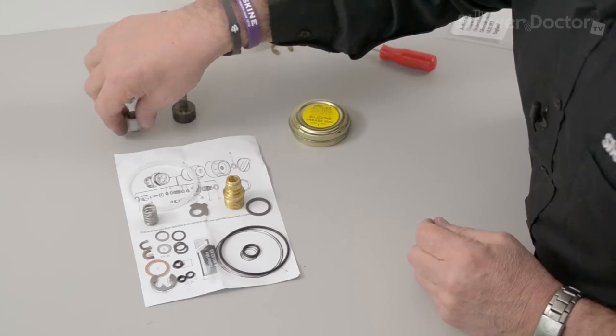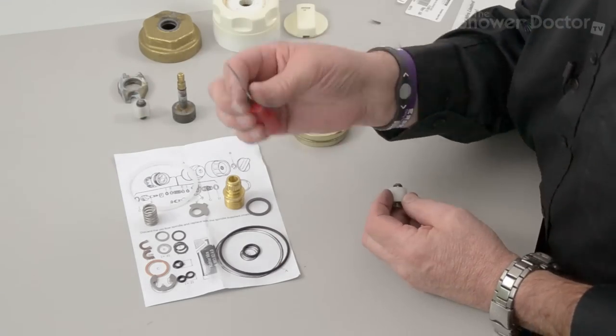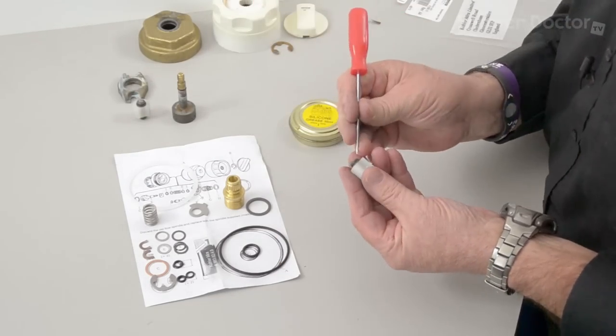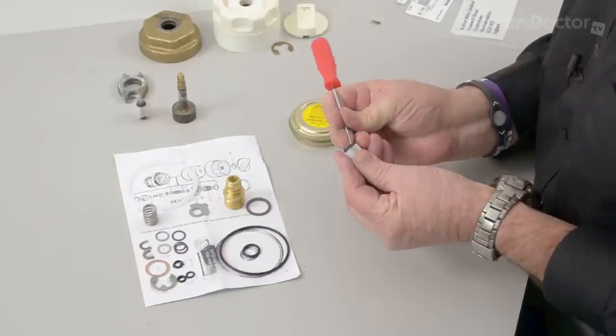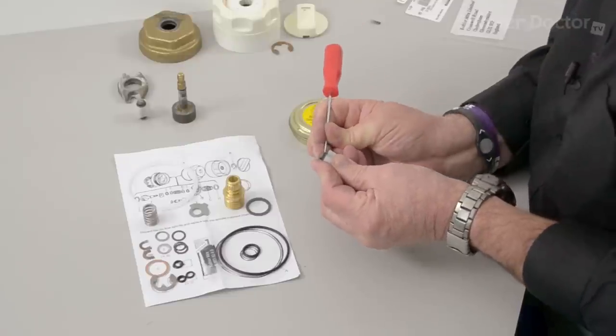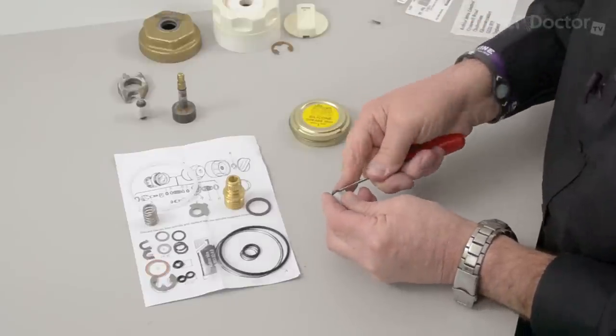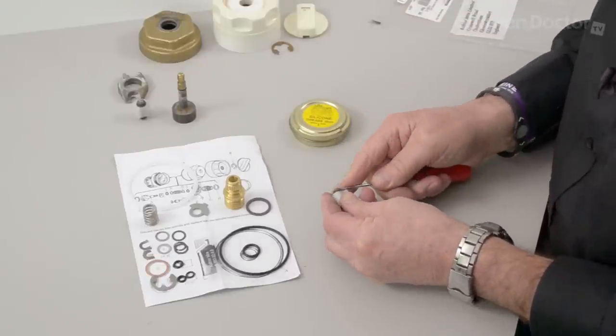Now we'll start to rebuild this. We'll do the hot and cold pistons first. You need something with a point on it to get the old seals off, just to dig them in and peel them out. Something sharp that can either poke into them or get behind the seals. These two are the smallest ones and so they can be quite difficult to get out.